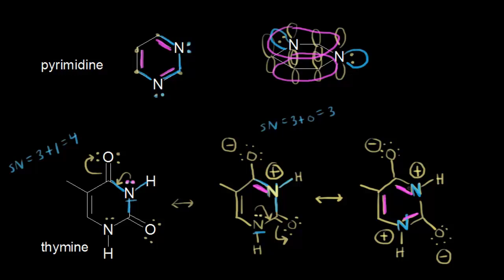Now it's a little more obvious that the thymine molecule contains the pyrimidine ring, and therefore it is aromatic with extra stability associated with it. Drawing resonance structures allows you to see the possible aromaticity or extra stability in a molecule. This is an example of a biological aromatic heterocycle — a molecule found in biochemistry that we can analyze using the simple concepts of aromaticity in organic chemistry.